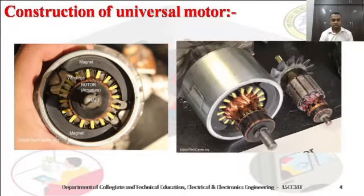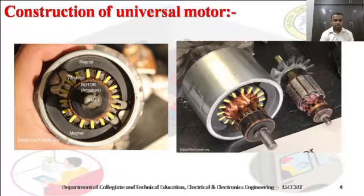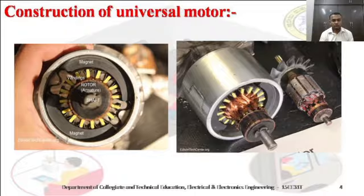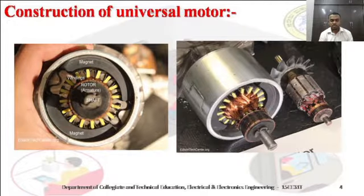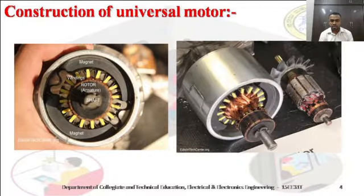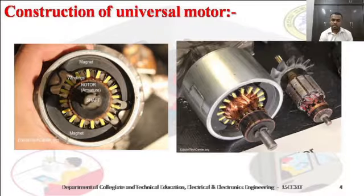Next is the construction of the universal motor. This is a picture of a universal motor — it is a cross-section view. In the first picture we can see the magnet, which is nothing but the field windings, then the rotor (armature), and the shaft. In the second picture, the stator and rotor have been separated so we can clearly see the armature winding, the commutator, and the shaft.